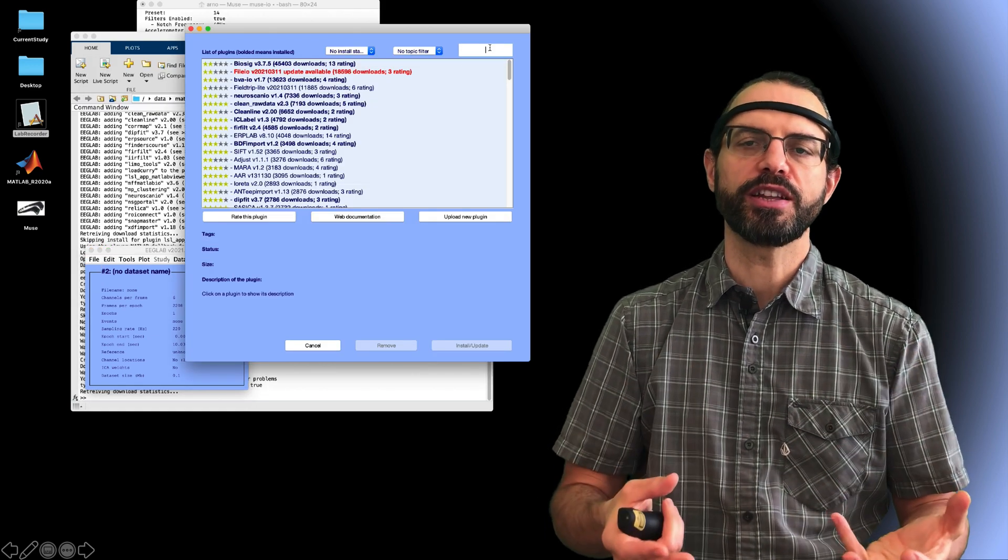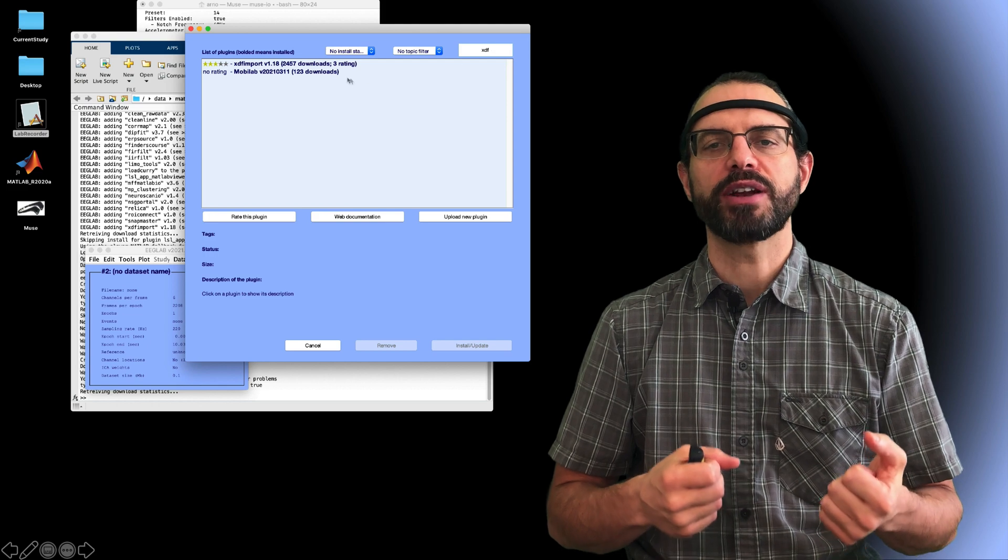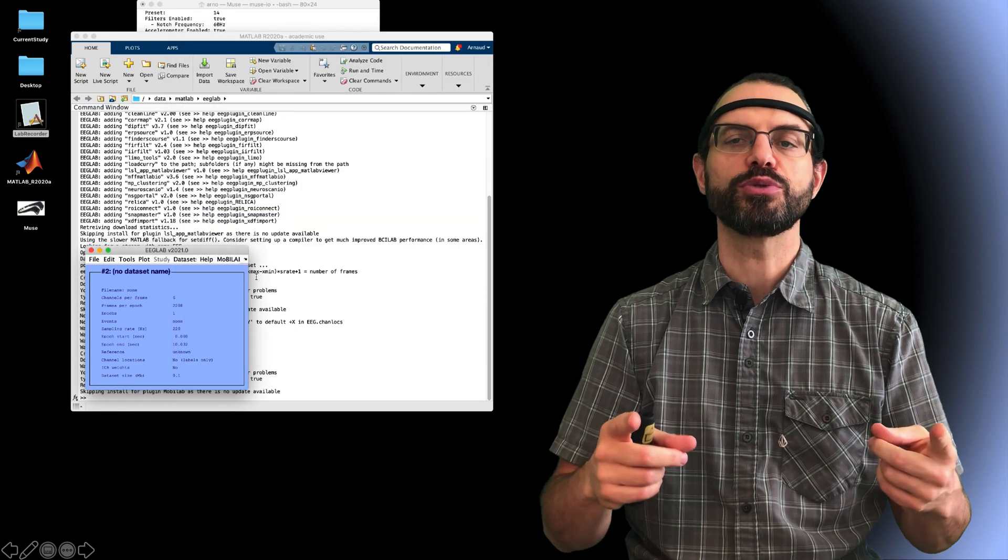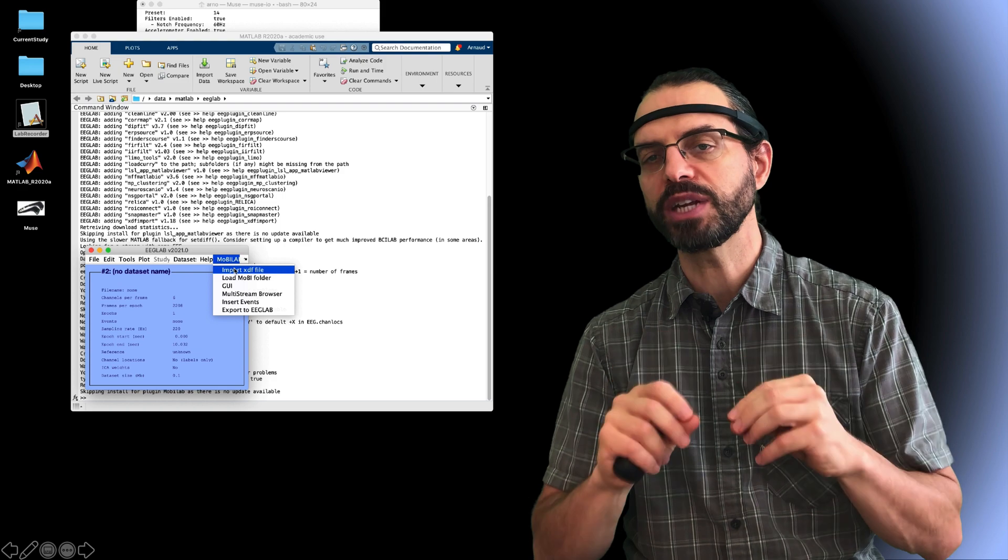First, we need to install the plugin, of course. This plugin will allow you to select different streams and align them, to resample them, to match the EEG sampling rate.